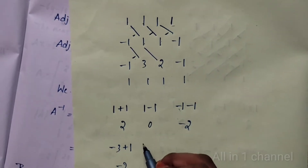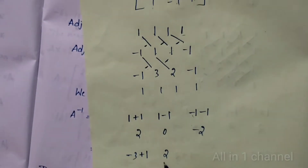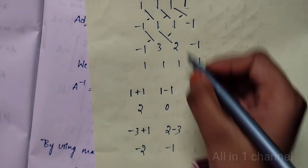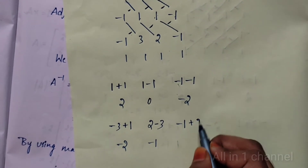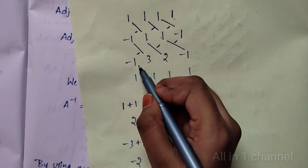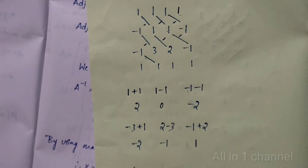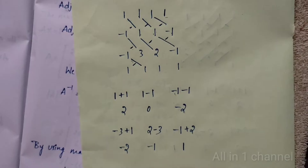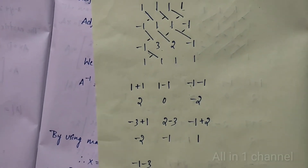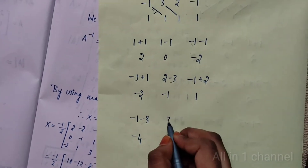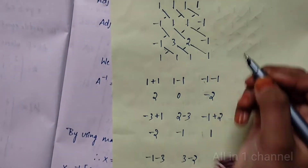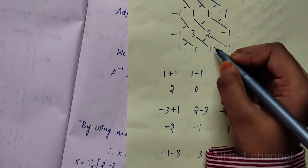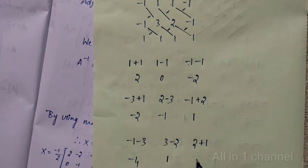Continuing cofactor computations: minus 3 plus 1 equals minus 2. Then 1 into 2 equals 2. Then 3 into minus 1 equals minus 3. So 2 minus 3 equals minus 1. Then 1 into minus 1 equals minus 1. Then 2 into minus of minus 1 equals plus 2. So minus 1 plus 2 equals 1. Then minus 1 into minus 1 equals minus 1 (with sign becomes minus 1), minus 3, total minus 4. Then 3 into 1 equals 3. Then 1 into minus 2 equals minus 2. So 3 minus 2 equals 1. Then 2 into 1 equals 2. Then 1 into minus of minus 1 equals plus 1, so this is 3.